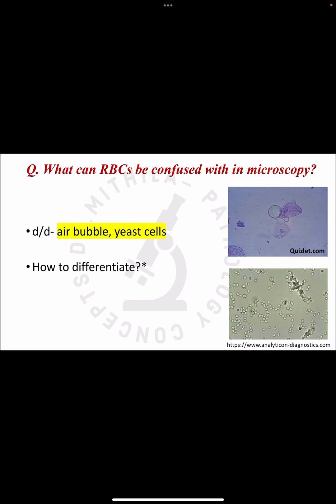The next question is: what can RBCs be confused with in microscopy? RBCs appear as round spherical structures. In differential diagnosis, they can be confused with air bubbles, but air bubbles are of variable sizes and disappear when the cover slip is removed and reapplied. They can also be confused with yeast cells. Adding glacial acetic acid will lyse the RBCs but not the yeast, allowing differentiation.